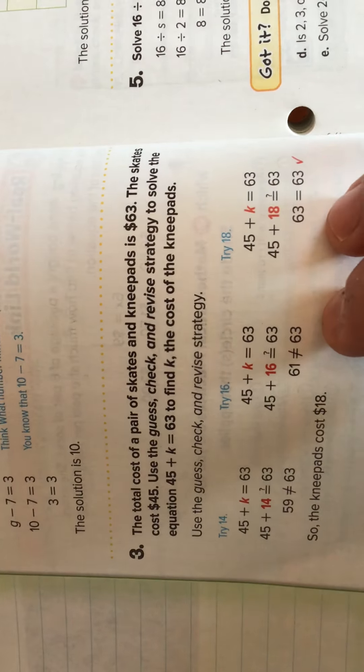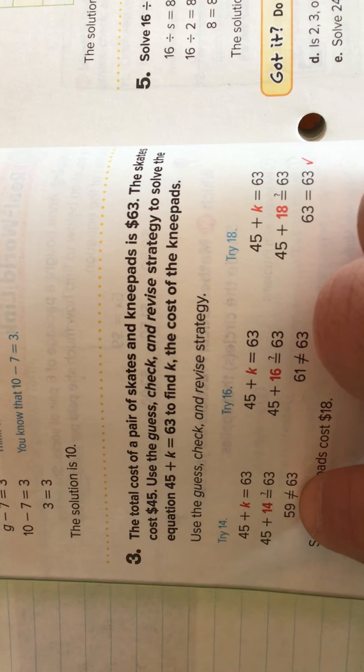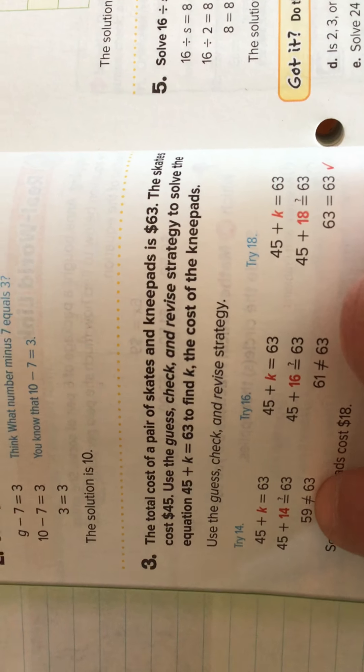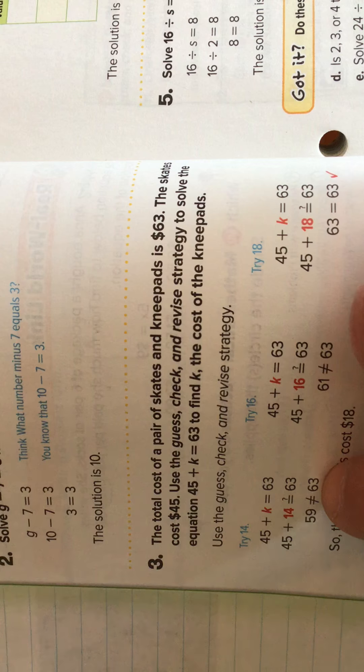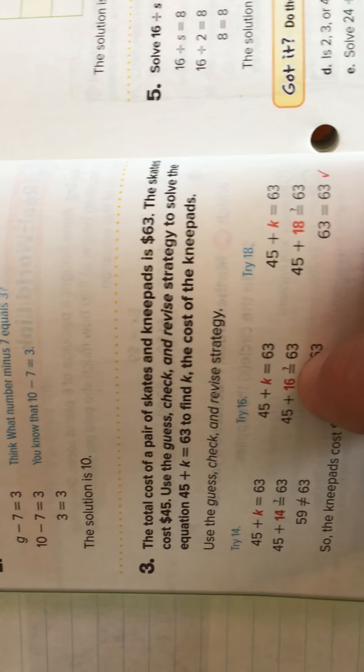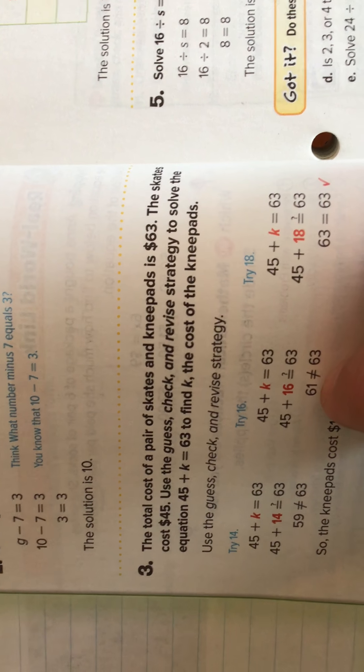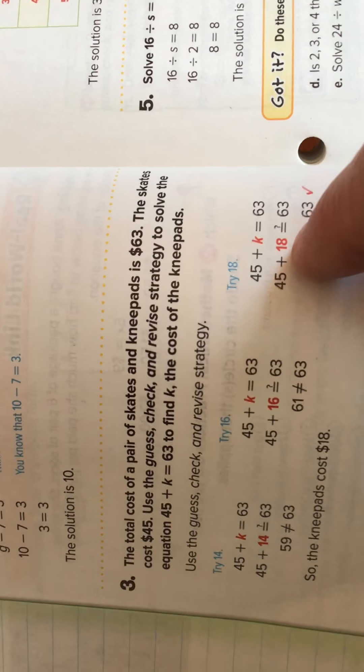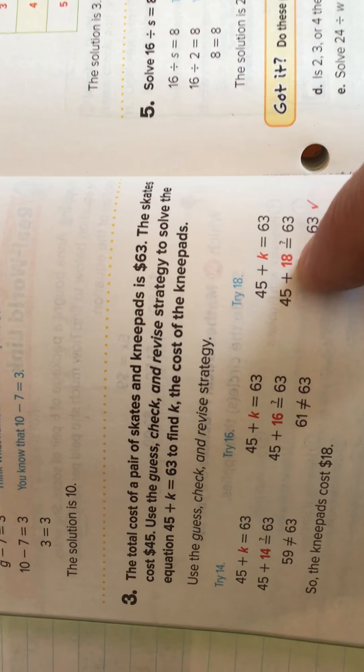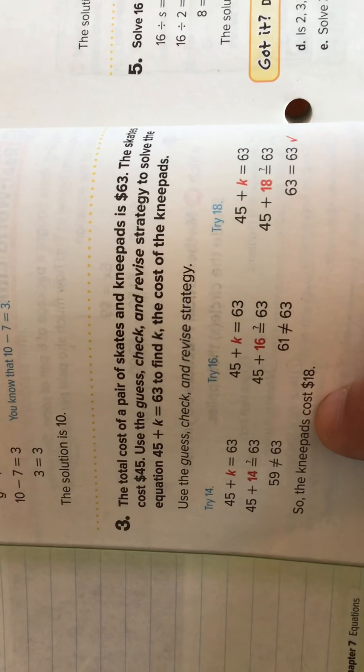They want us to just guess, check, and revise. Here we see that the first guess they took was 14. Adding 14 and 45, we get 59. No, that's not 63. Let's try 16. 45 plus 16 is 61. We're getting pretty close. Bump up a couple. Sure enough, 45 plus 18 is 63. So, k equals 18. The knee pads cost $18.